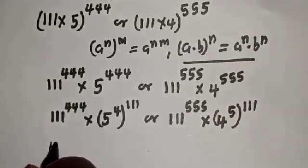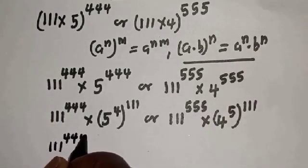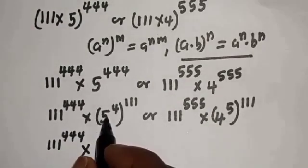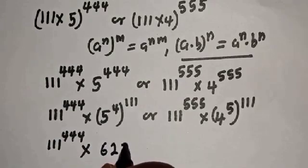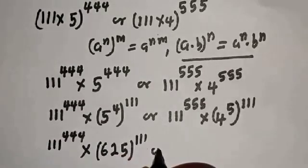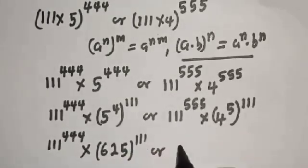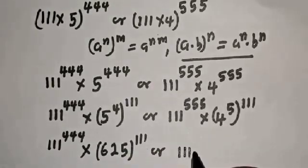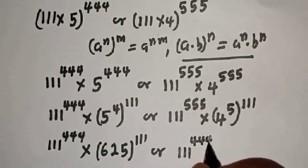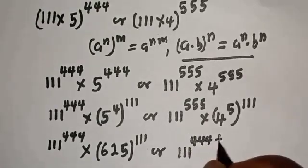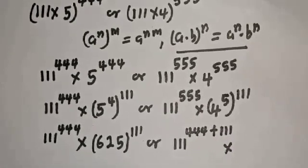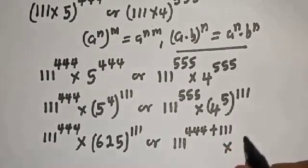So we have 111 raised to power 444, and 5 raised to power 4 equals 625, giving us 625 raised to power 111. On the other side, 111 raised to power 555 can be written as 111 raised to power 444 plus 111, multiplied by 4 raised to power 5 raised to power 111.